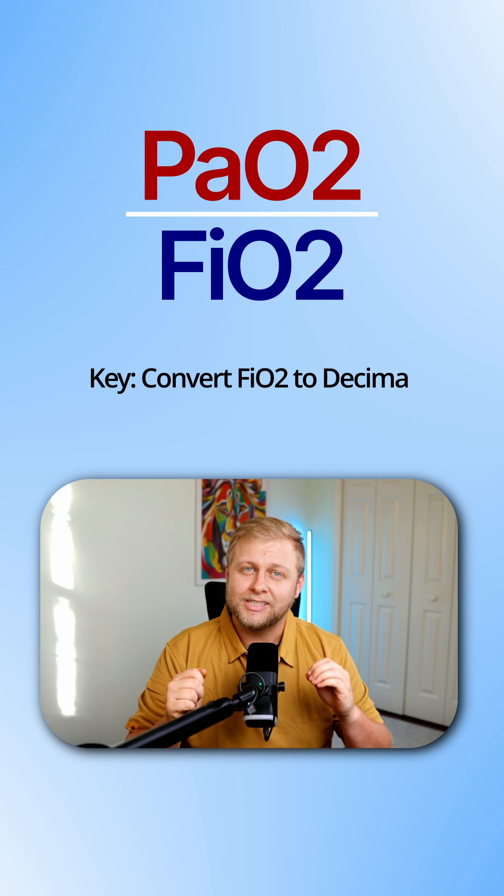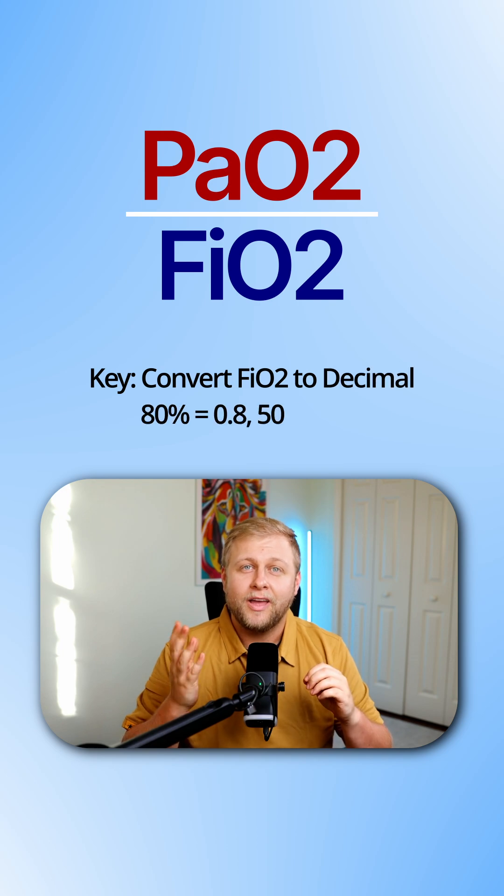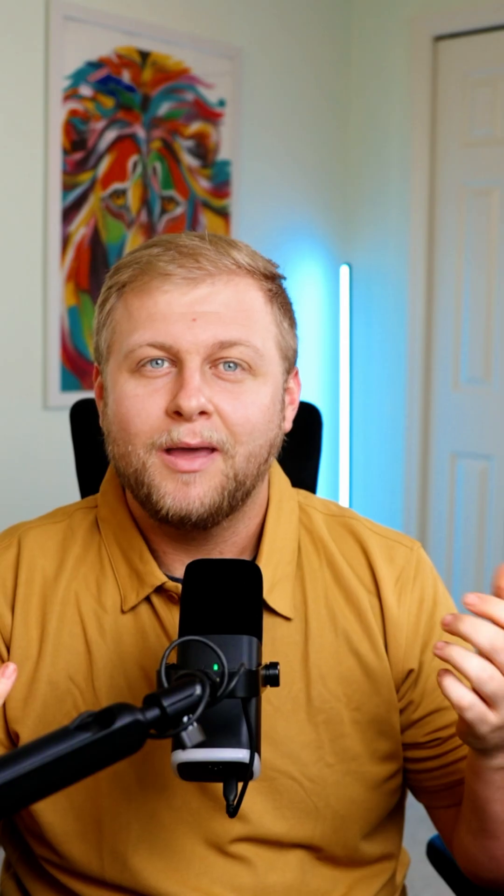This is where a simple PF ratio calculation can reveal just how sick their lungs actually are. The formula is P over F — PaO2 over FiO2. The key is to convert the FiO2 percentage to a decimal, so 50% FiO2 would actually be 0.5.